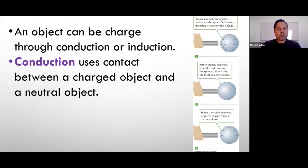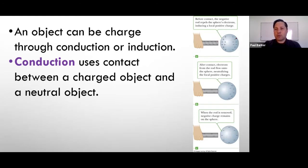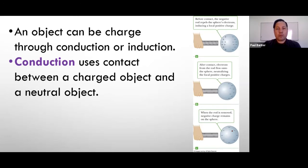An object can be charged through conduction or induction. Conduction uses contact — when a charged object and a neutral object come into contact with each other. A charged rod with negative charges is placed near a neutral object, sending negative charges to the right side and positive charges toward the left. Contact is made and the positives and negatives cancel each other out, so the rod has fewer negative charges and the sphere has fewer positive charges. After separation, the sphere will have gained a negative charge. That is conduction — they actually have to come into contact with each other.